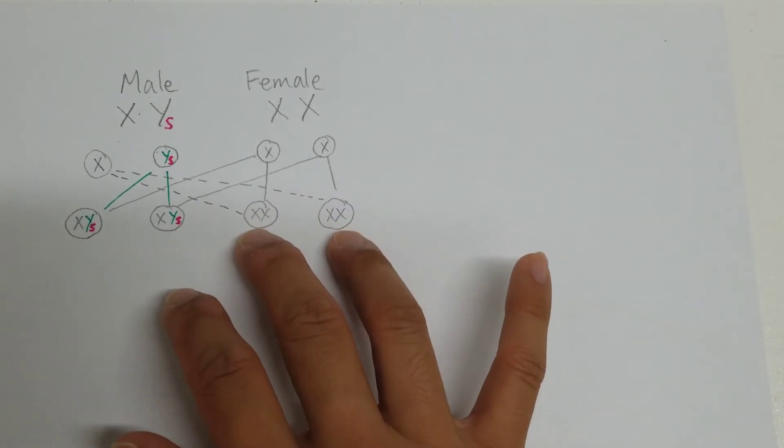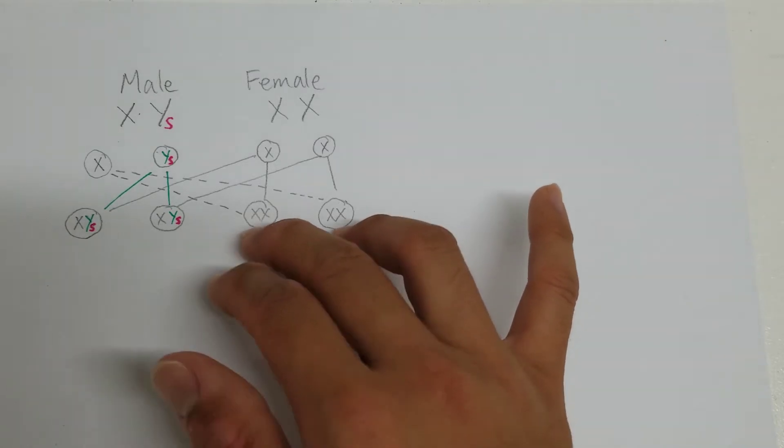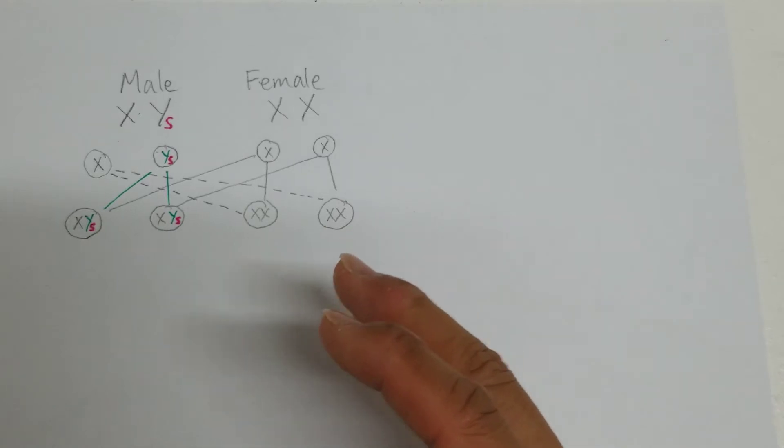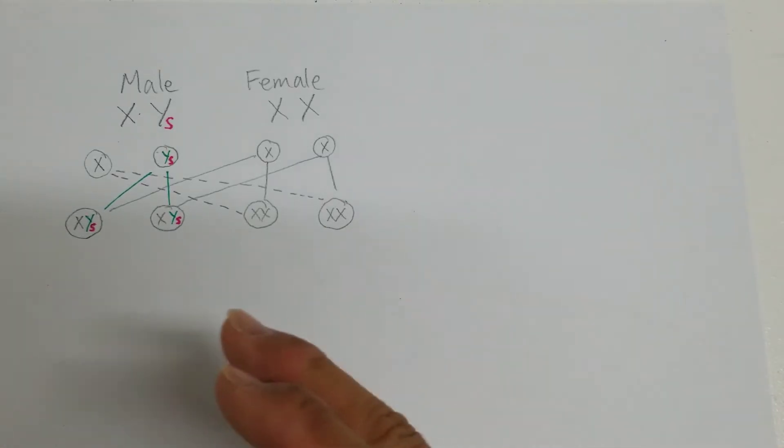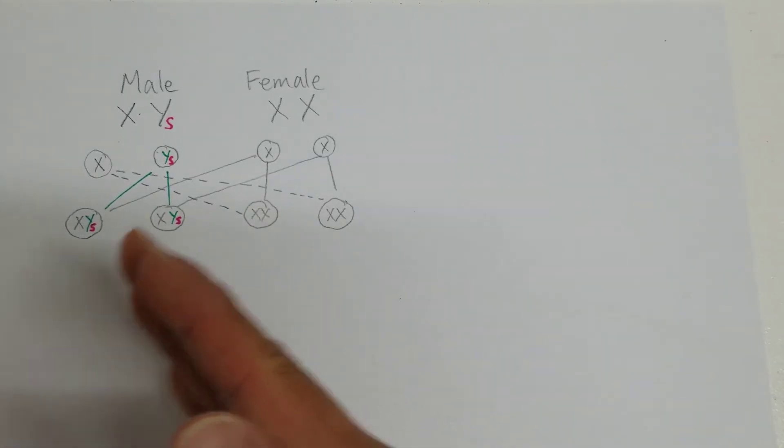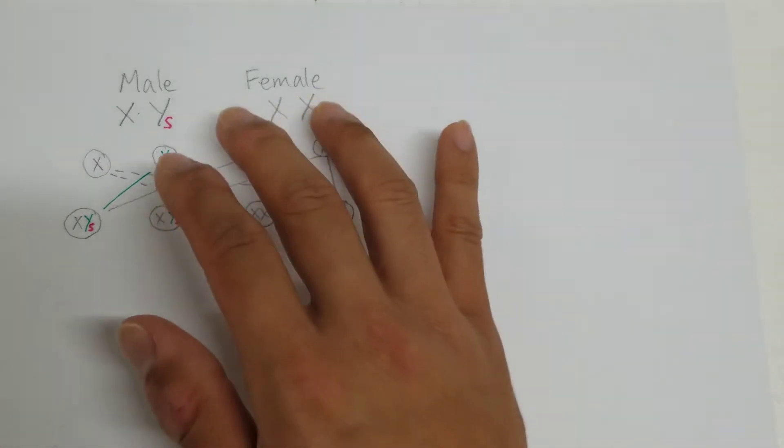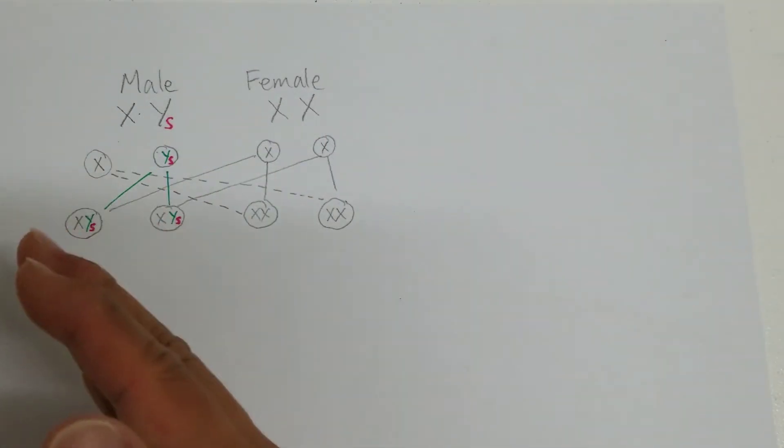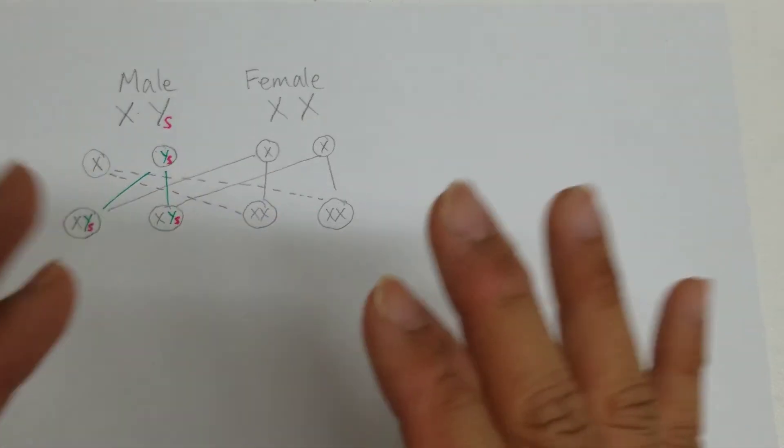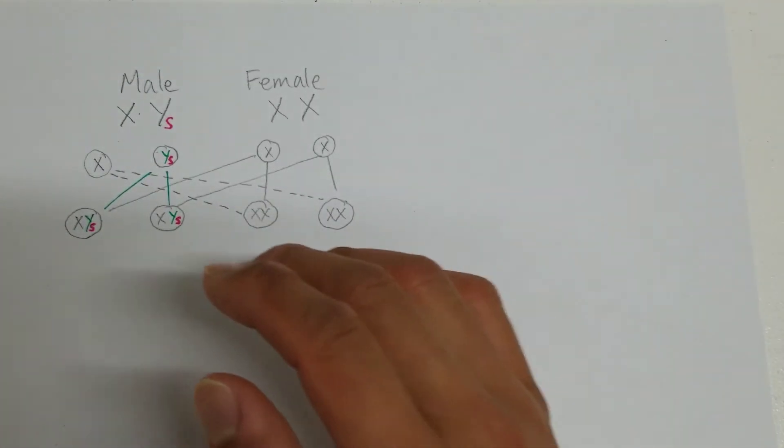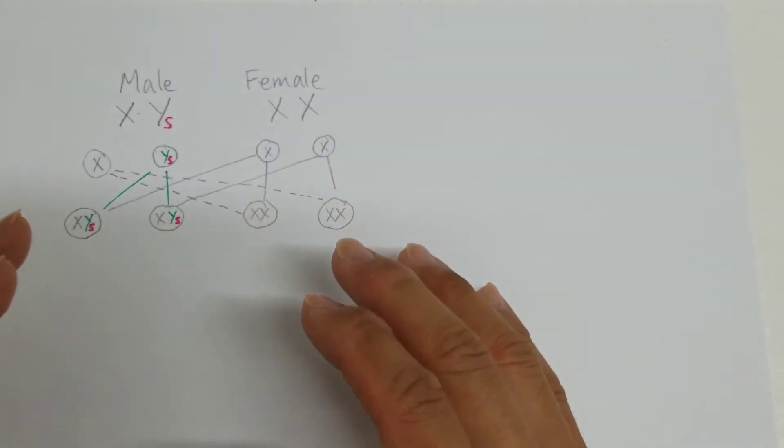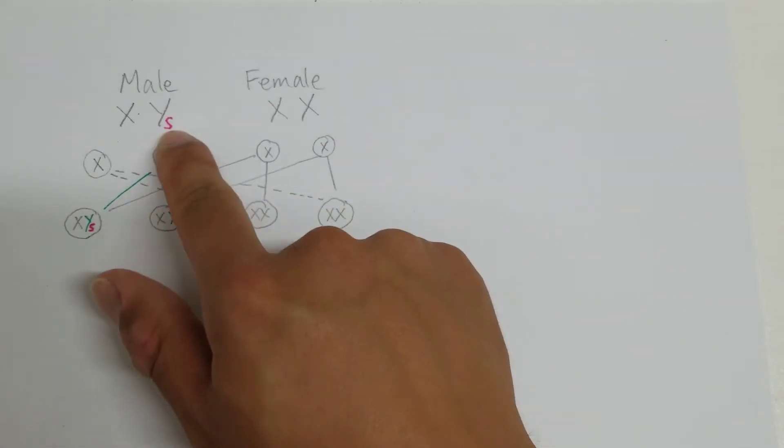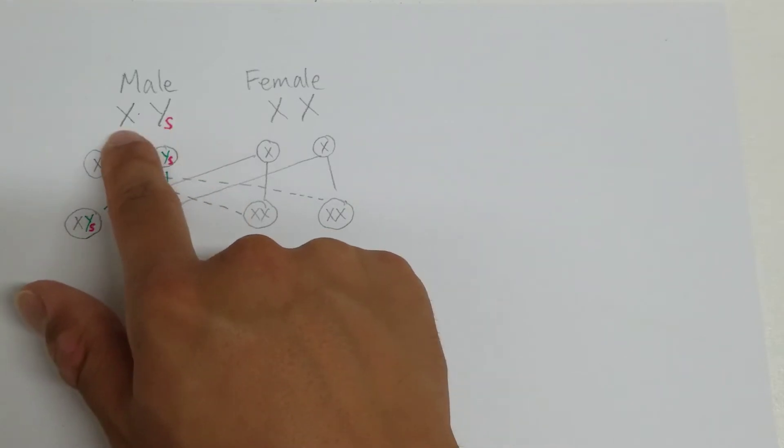So that means the coral glow male that I have is a male maker. Now you've probably also heard of female makers. Now only male coral glows can be either a male maker or a female maker. Females always produce 50% female coral glows and 50% male coral glows statistically. In order for the male to become a female maker, this sex link gene first needs to cross over to the X chromosome.